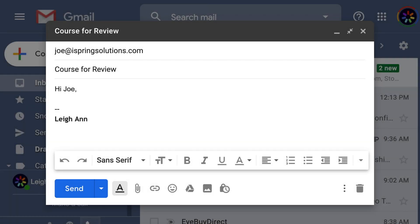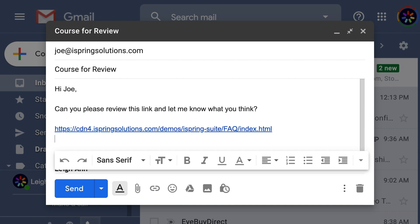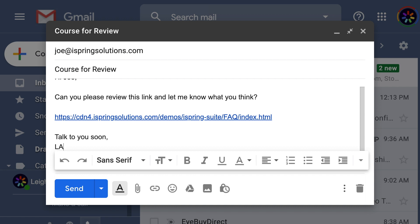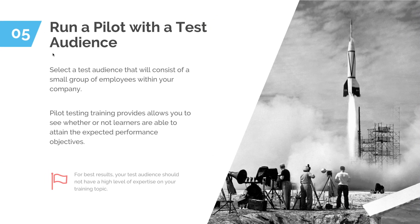Now that you've chosen the right module for your course and built it, it's time to send it to the subject matter experts and stakeholders. You can improve it based on their feedback. Before putting it into circulation across your organization, it's best to run a pilot. Select a test audience within your company and gather feedback from them both during and after the training. This is how you can find what gaps may exist in the training and improve it.